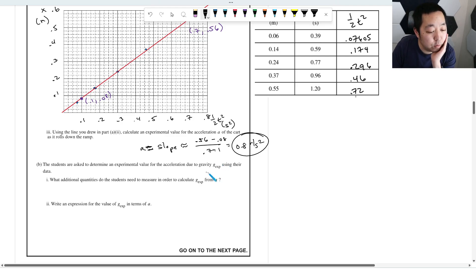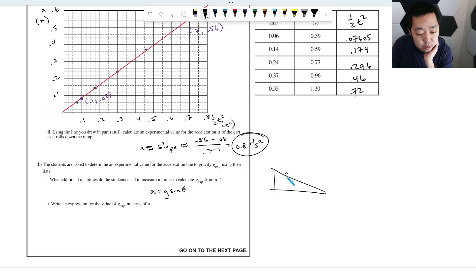Students are asked to determine the experimental value of gravity using that. What additional quantities are you to measure to calculate GX from the A? Well, you should know that the acceleration is G sine theta, right? And you can do that from a free body diagram. So here you have a cart, right? So you have Mg. You have normal force. And if you decompose our forces, this is Mg cosine theta. And this is for inclined plane, this is Mg sine theta. So I know that the net force down the ramp is Mg sine theta. That would equal M A, mass times acceleration, mass cancel. So the acceleration is G sine theta.